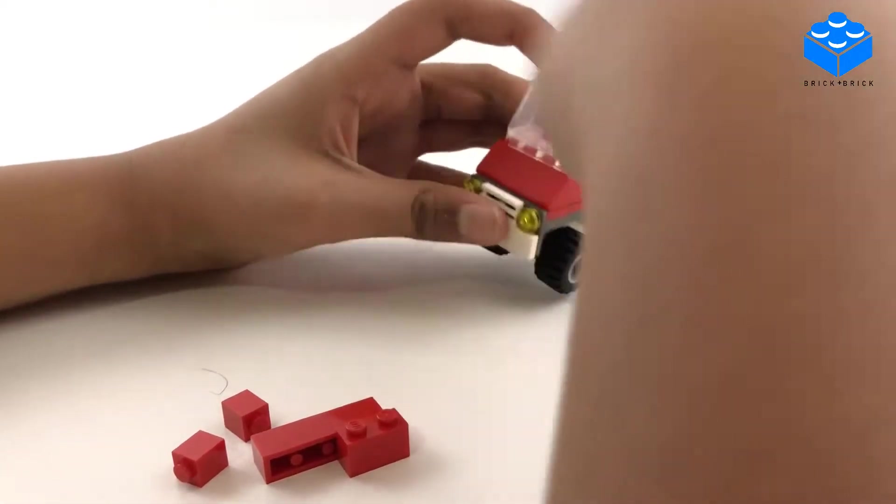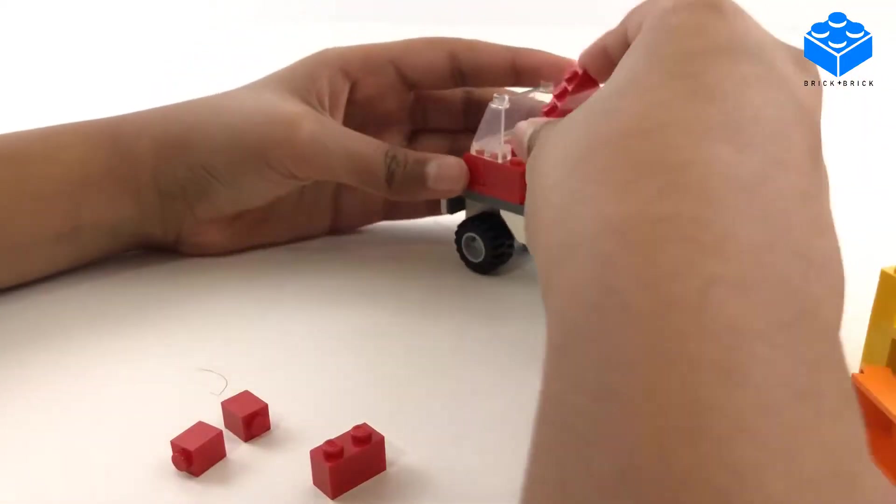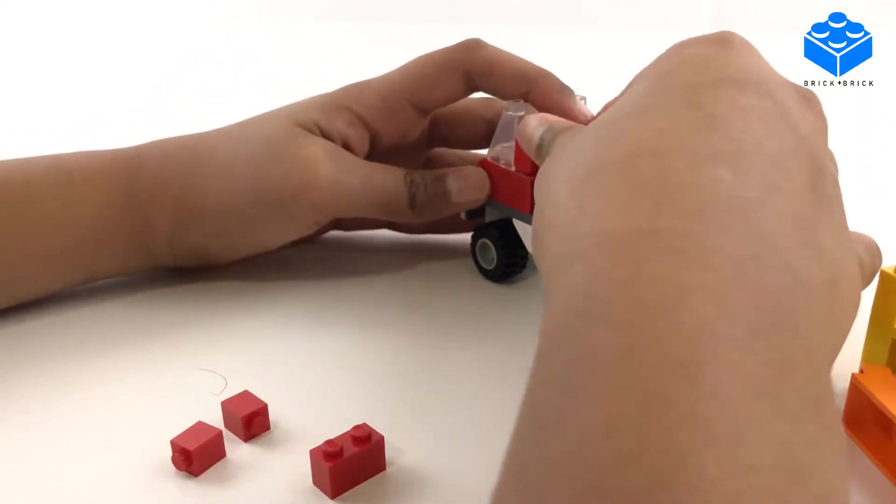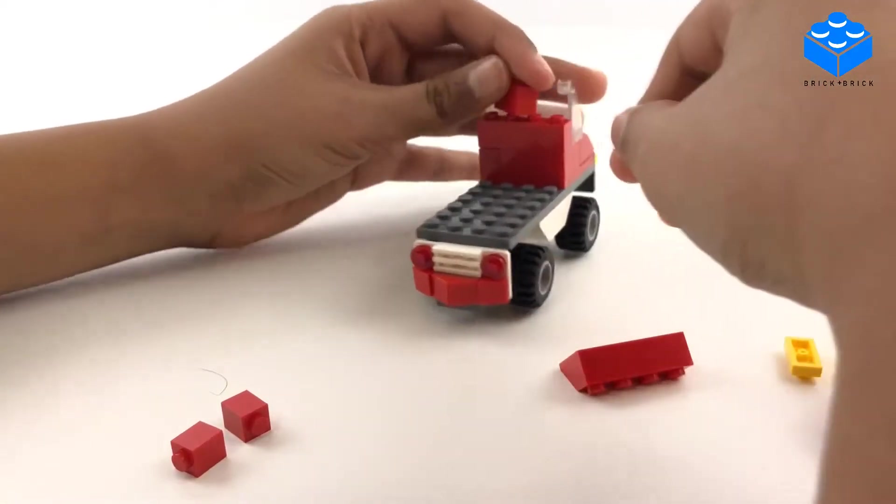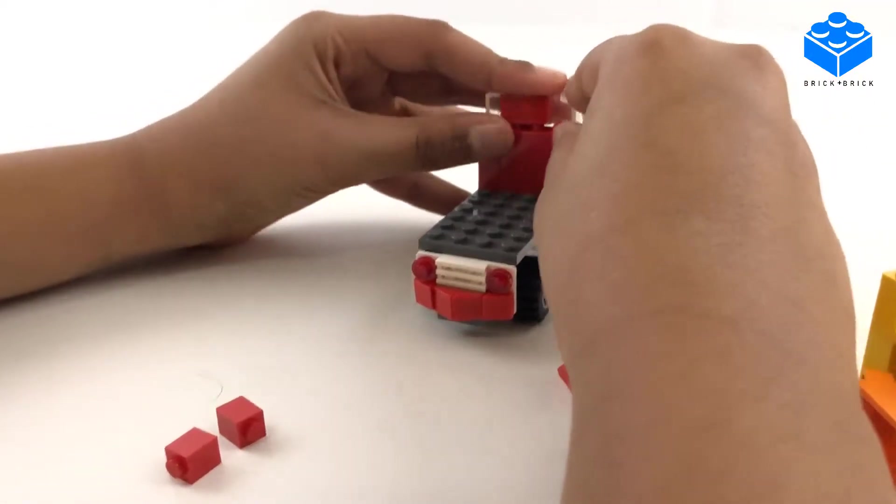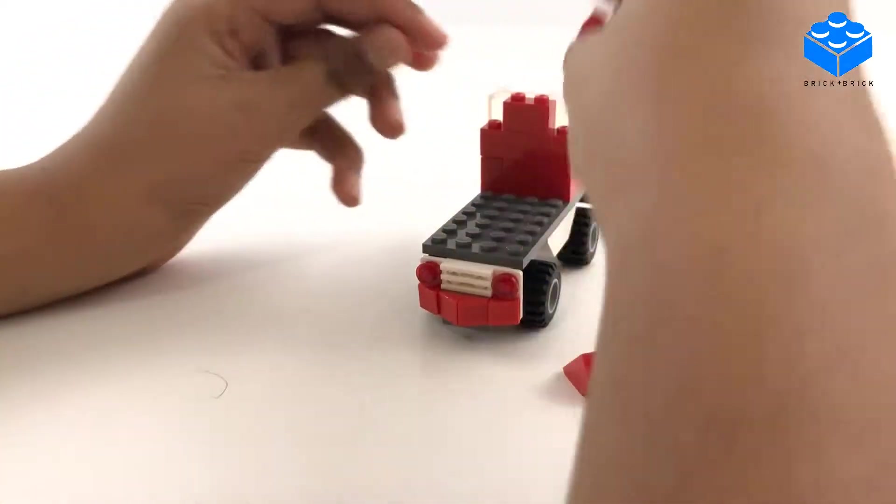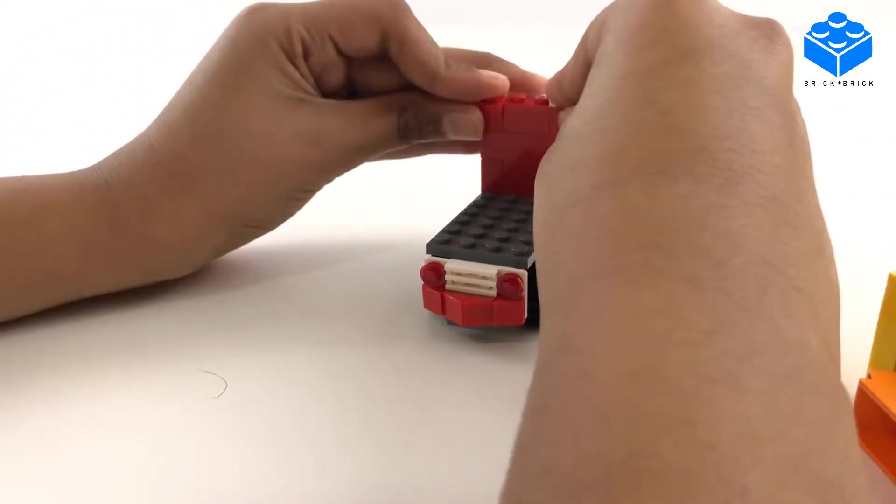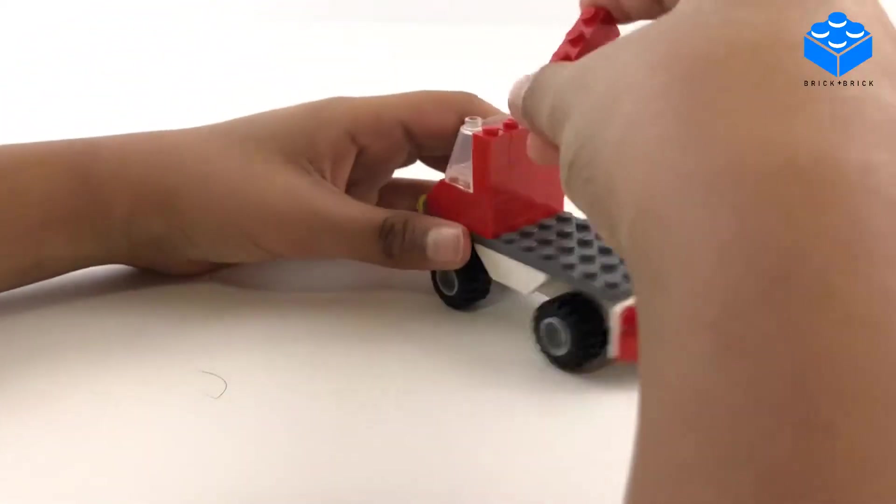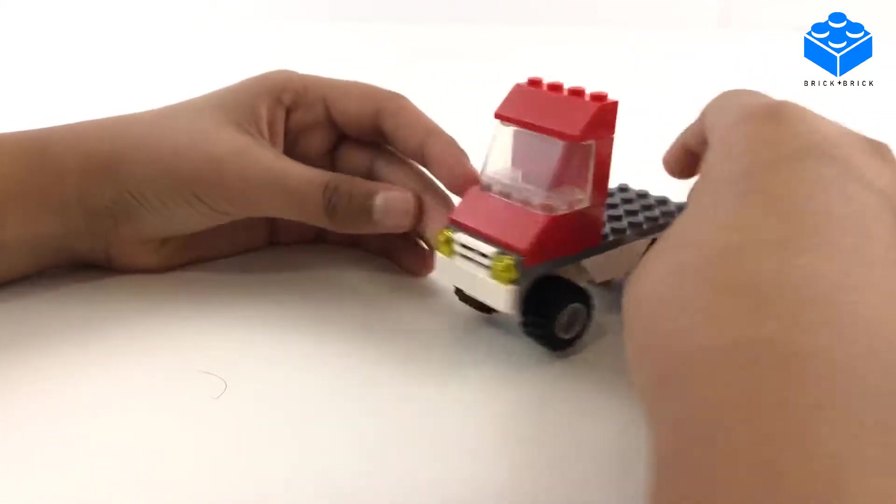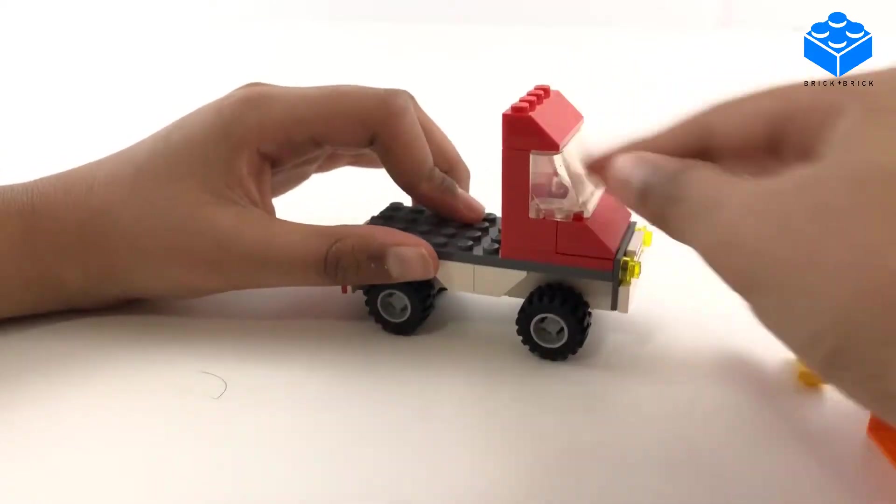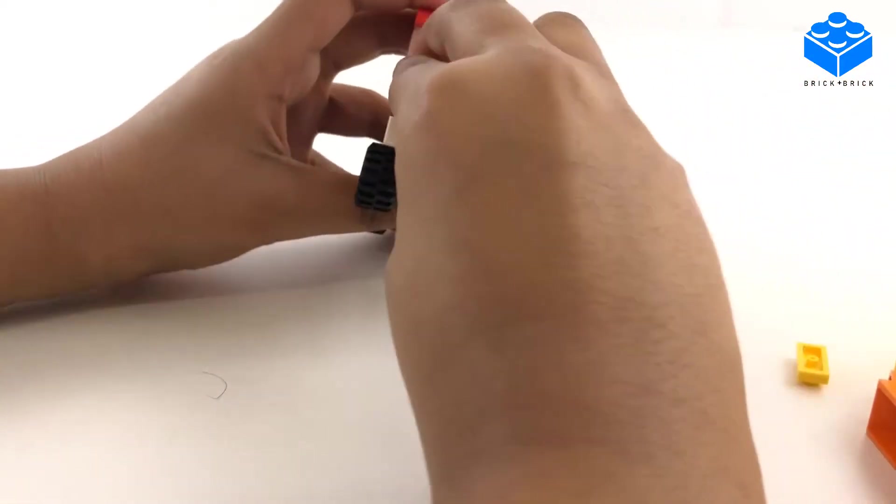And then our windshield, which is going to be using the rest of our pieces, and then this last two by four slope piece on top to finish the roof.